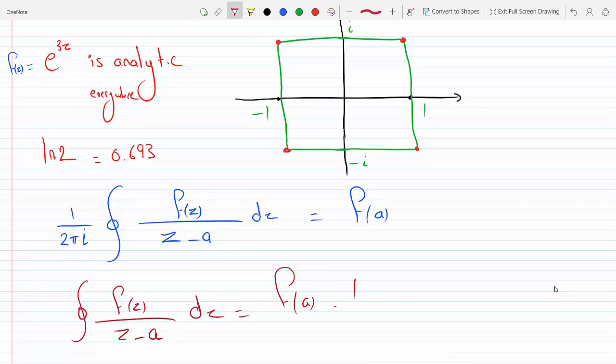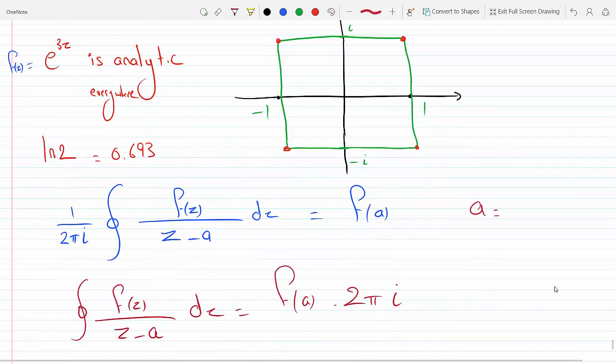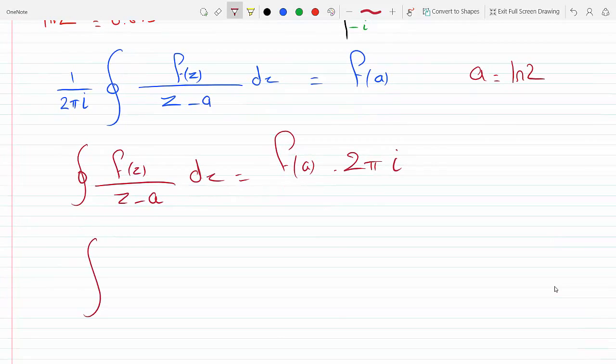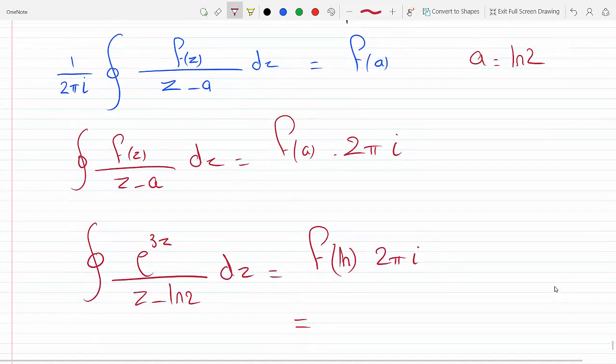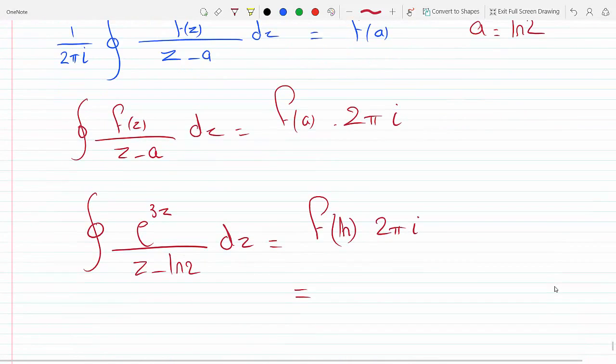And what's a? Well if you look at the integral, a is ln(2). So that means the integral of e^(3z)/(z-ln2) dz is just f(a), so that's f(ln2) times 2πi. And what's f(ln2)? Well f(z) is e^(3z), so f(ln2), you just replace z with ln(2).